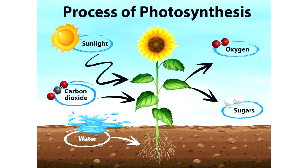Sunlight is taken in and absorbed by the chlorophyll in the leaves and other green parts of the plant. Chlorophyll, as we said earlier, is a chemical found in special structures in plant cells called chloroplasts. Water is then transferred from the roots to the leaves and stems, and carbon dioxide enters the plant through the tiny openings in the leaves called stomatas. The food made is called sugar or glucose. Oxygen is released into the air as a waste product after the process of photosynthesis is completed.